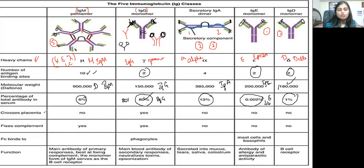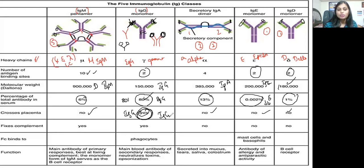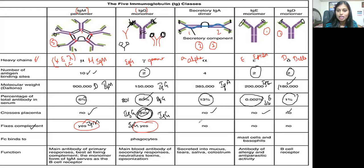Only one antibody crosses the placenta, and that is IgG. Other antibodies do not cross the placenta. During childbirth itself, we gain some immunity because of IgG — it crosses the placenta during fetal development and gives immunity to the newborn baby. Regarding complement fixation: complement fixation only takes place with IgM and IgG. There is no complement fixation in IgD, IgA, or IgE.